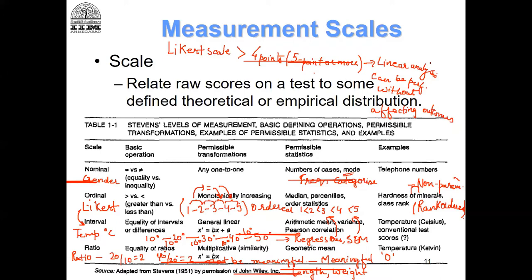To Amrita's question about why we consider Likert as interval: as I just mentioned in response to Suvendu's question, a five-point or more Likert scale gives quite robust responses, and therefore you can perform all kinds of analysis on these.